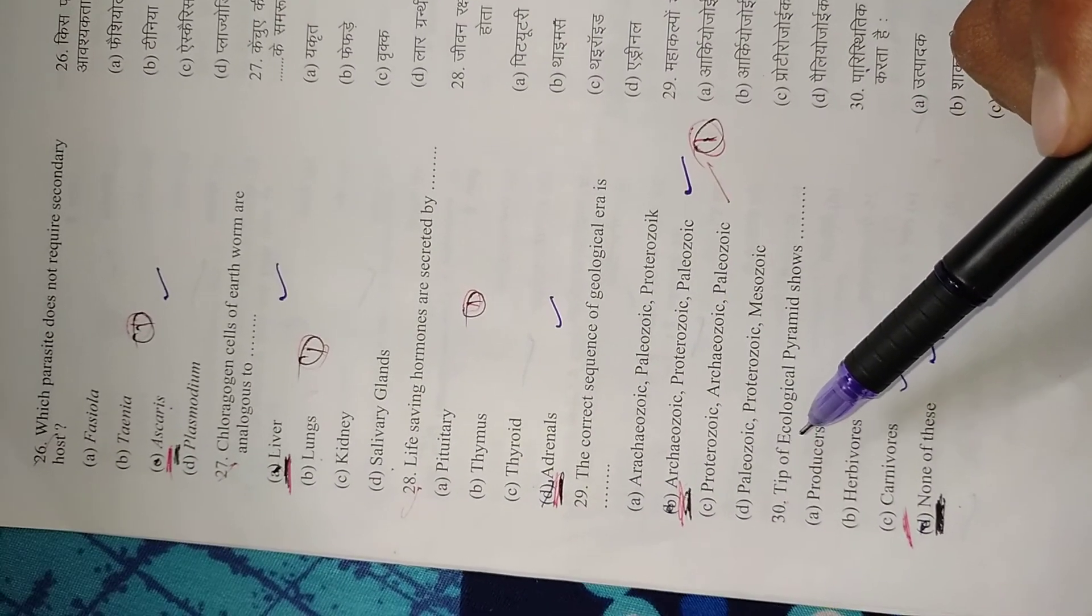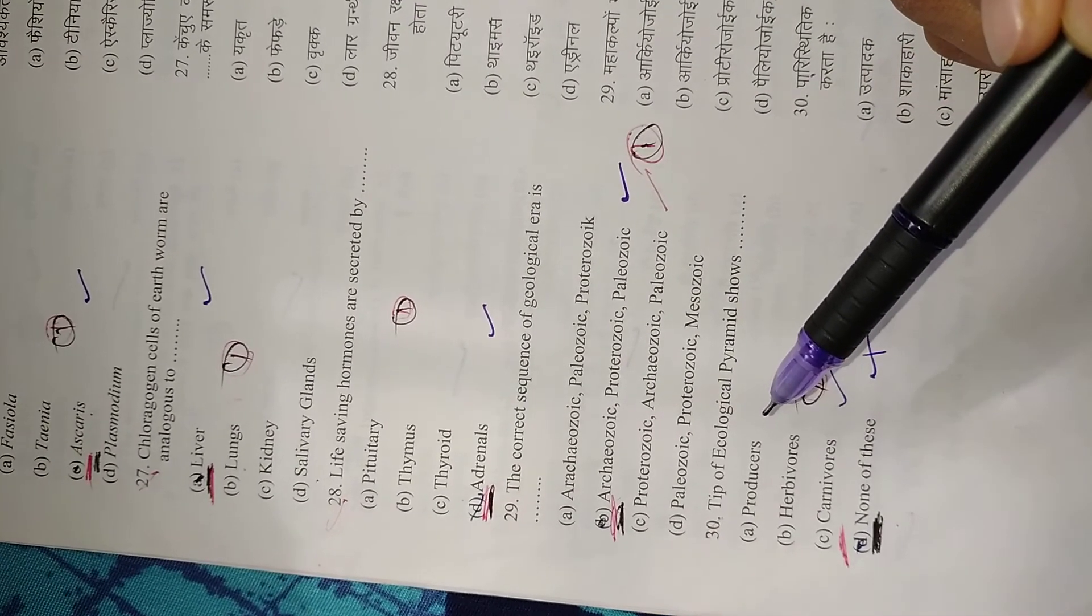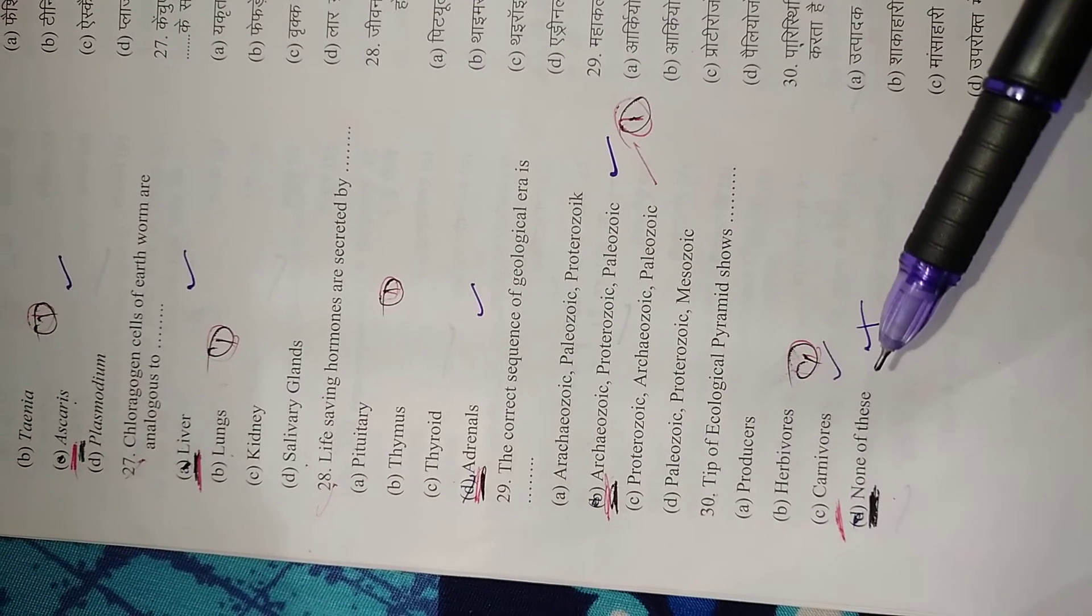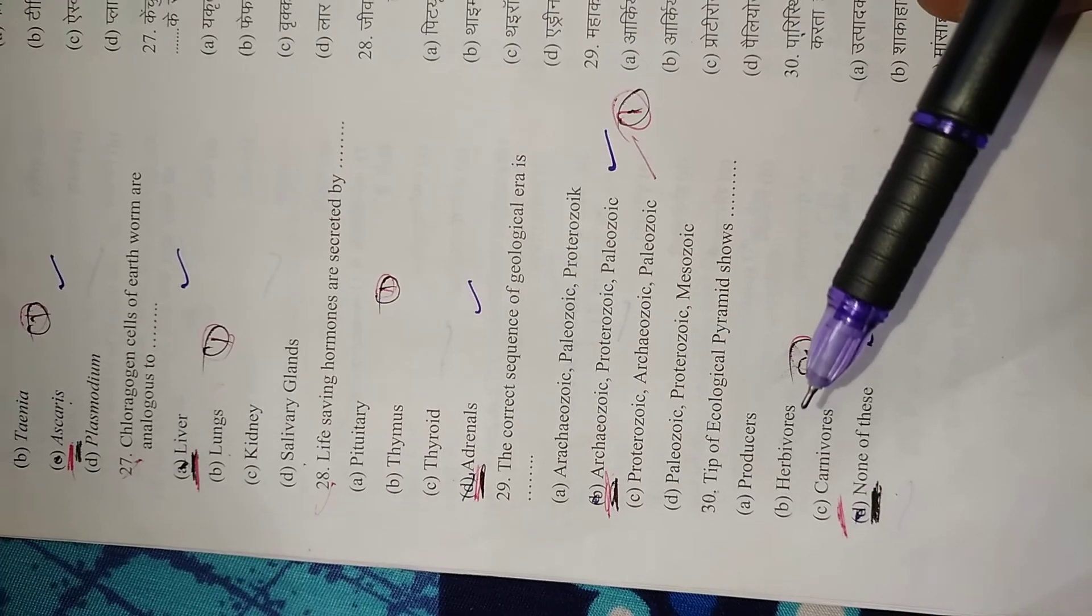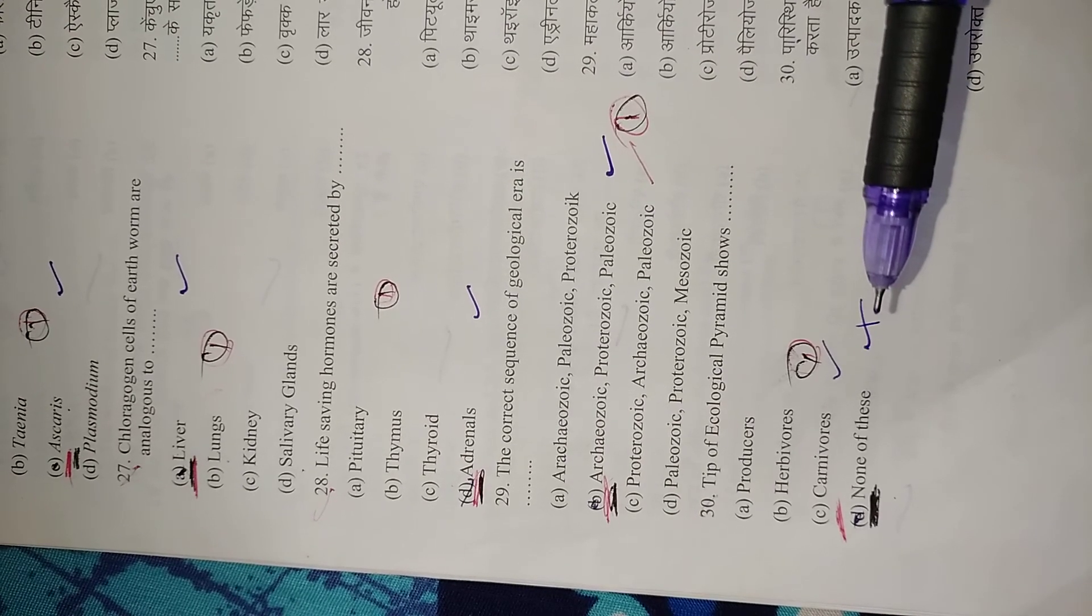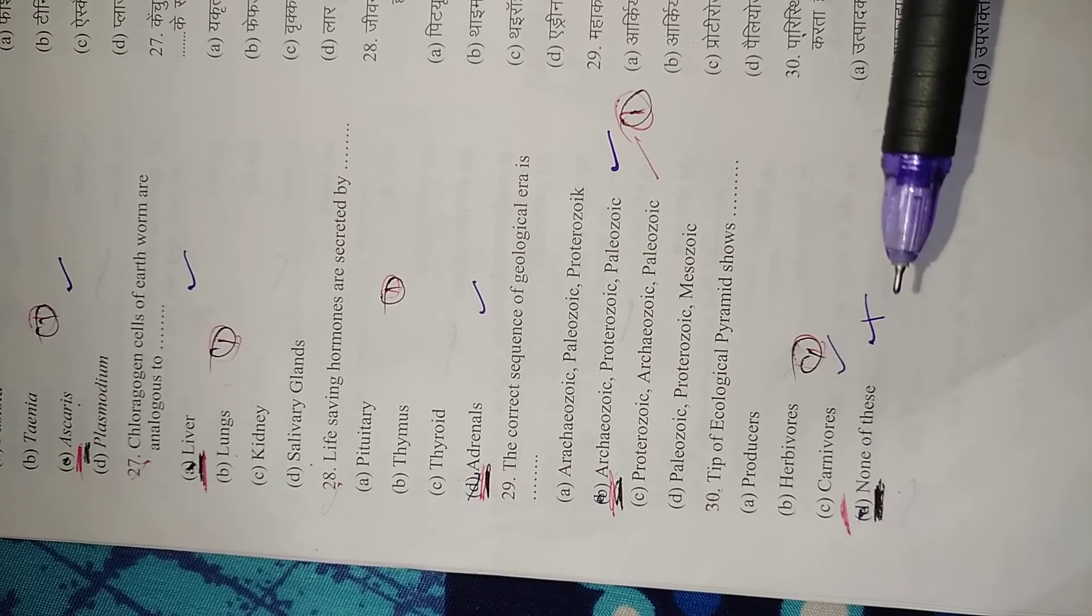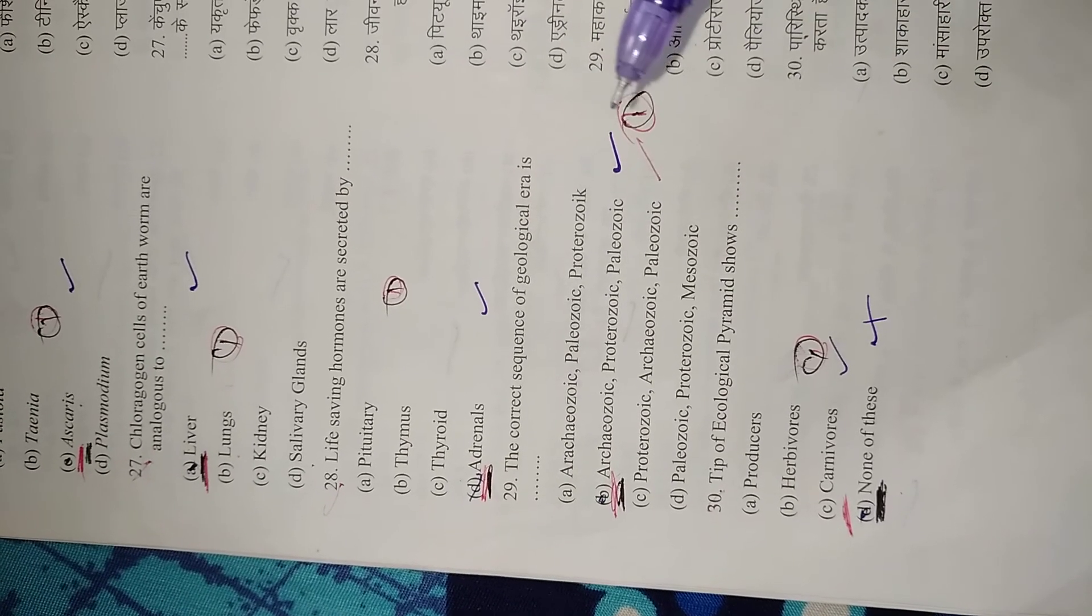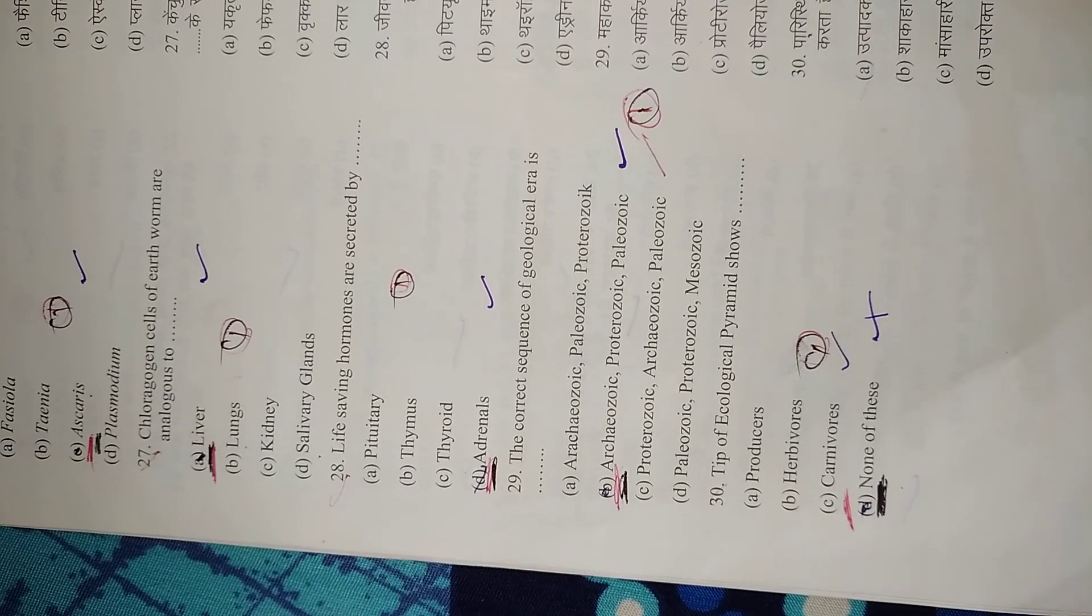Question 30: Tip of ecological pyramid shows? According to me, the right option should be C, carnivores, but the official answer key of the Central University says none of these. There are 60 questions and I'm covering only the first 30 questions in this first part. The next 30 questions will be in the second part of the video. Please like and share. The link will be given in the description. Thank you.